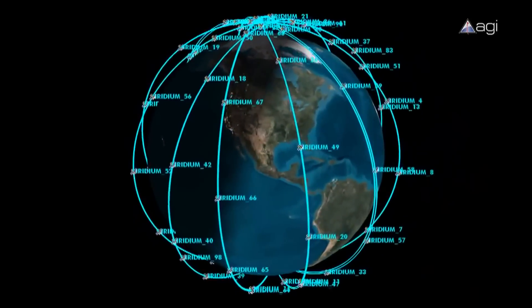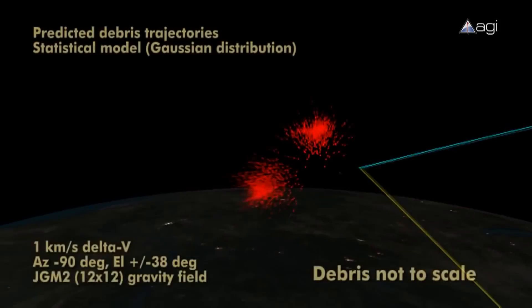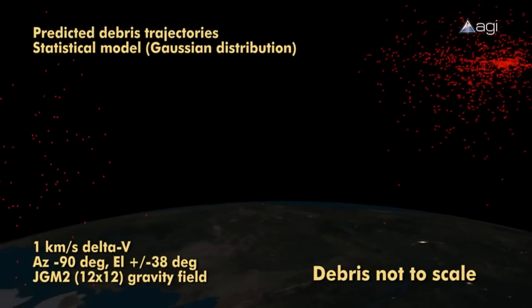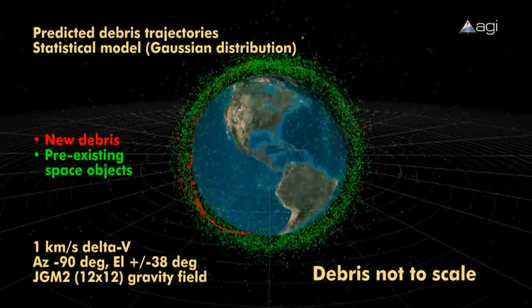In 2009, the expected happened, and the American Iridium satellite collided with debris from an inactive Russian satellite. The result? 2,000 more pieces of debris and the destruction of a $55 million satellite.